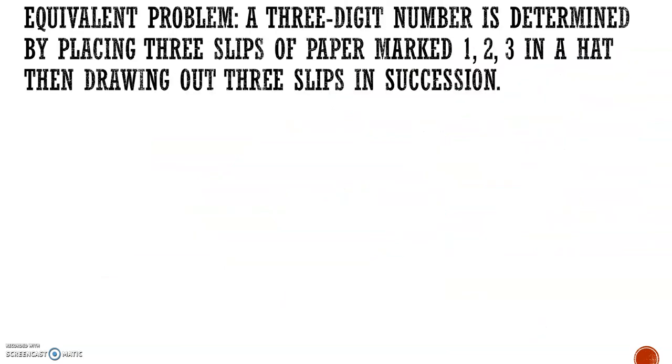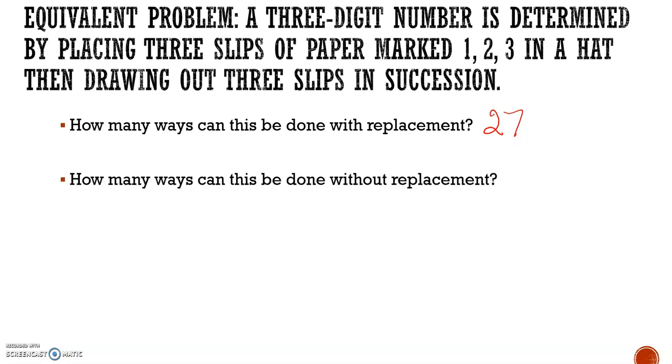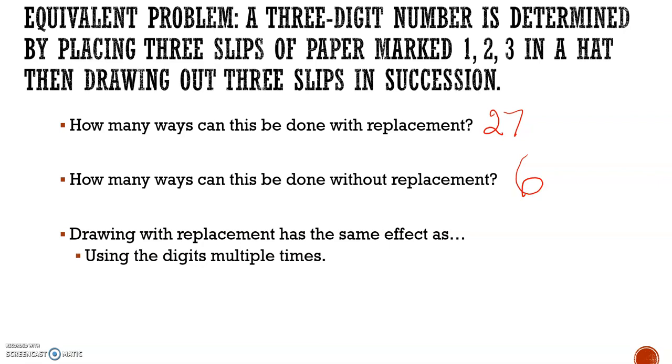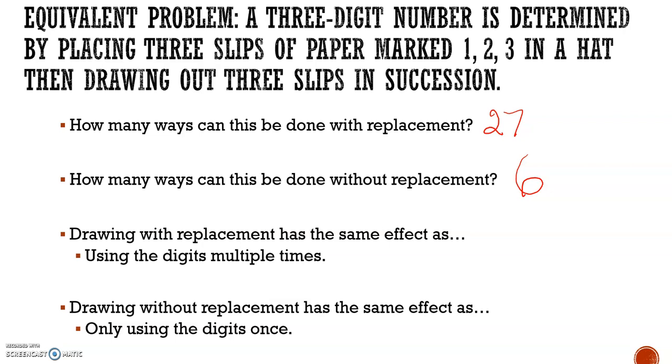Equivalent problem asks: a three-digit number is determined by placing three slips of paper marked 1, 2, 3 in a hat, then drawing out three slips in succession. How many ways can this be done with replacement, so putting it back in, so meaning the same digit could happen multiple times, and we just answered that question: 27. How many ways can this be done without replacement, meaning the digit 1 would not happen twice, the digit 2 would not happen twice, the digit 3 would not happen twice. There are 6. Drawing with replacement has the same effect as using the digits multiple times. Drawing without replacement has the same effect as only using the digits once.